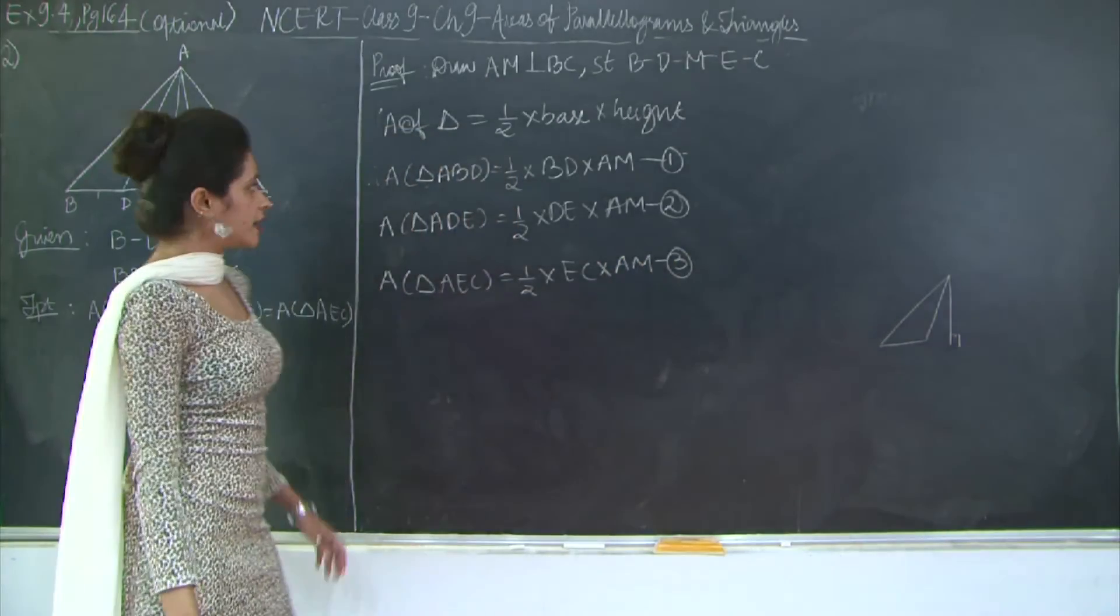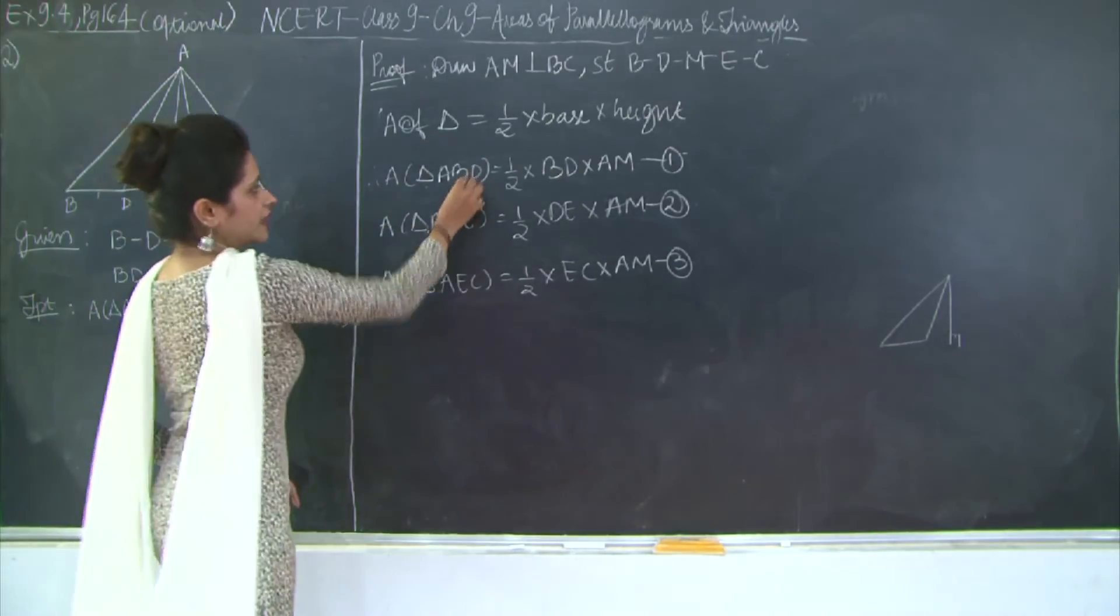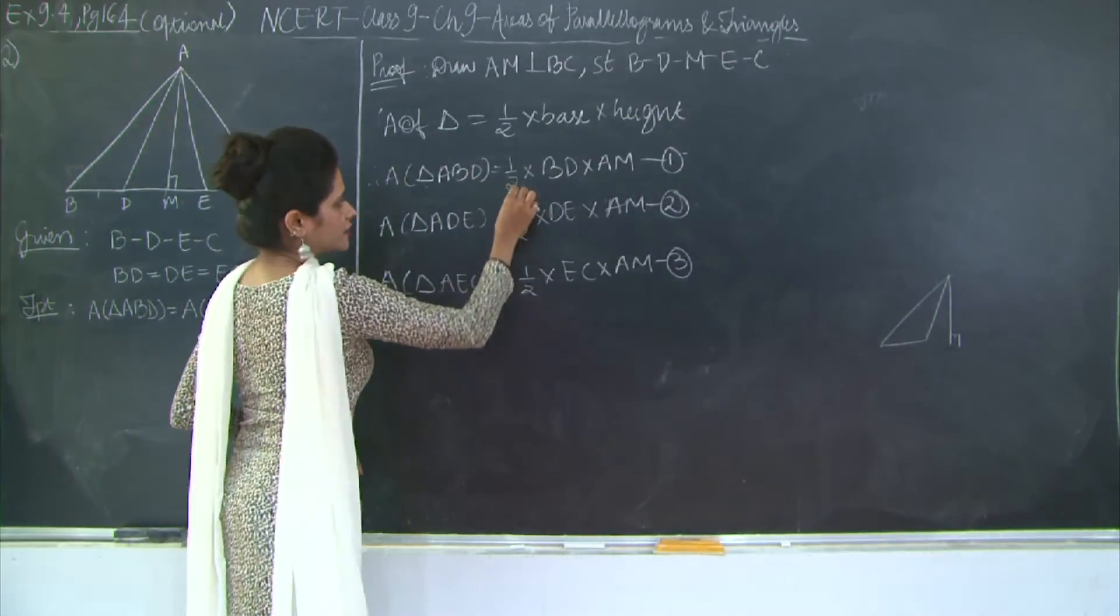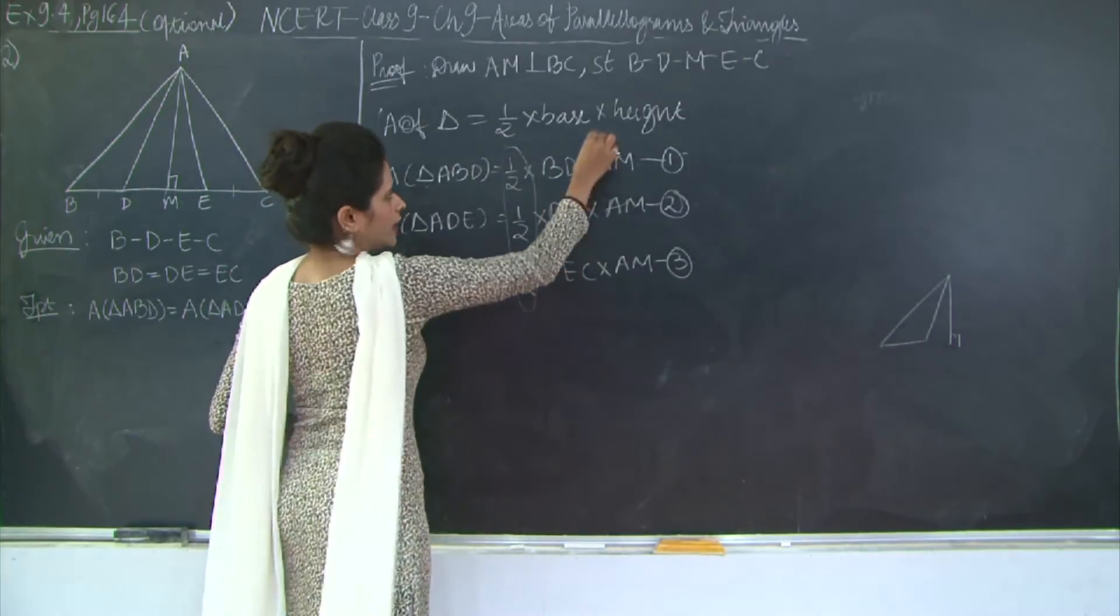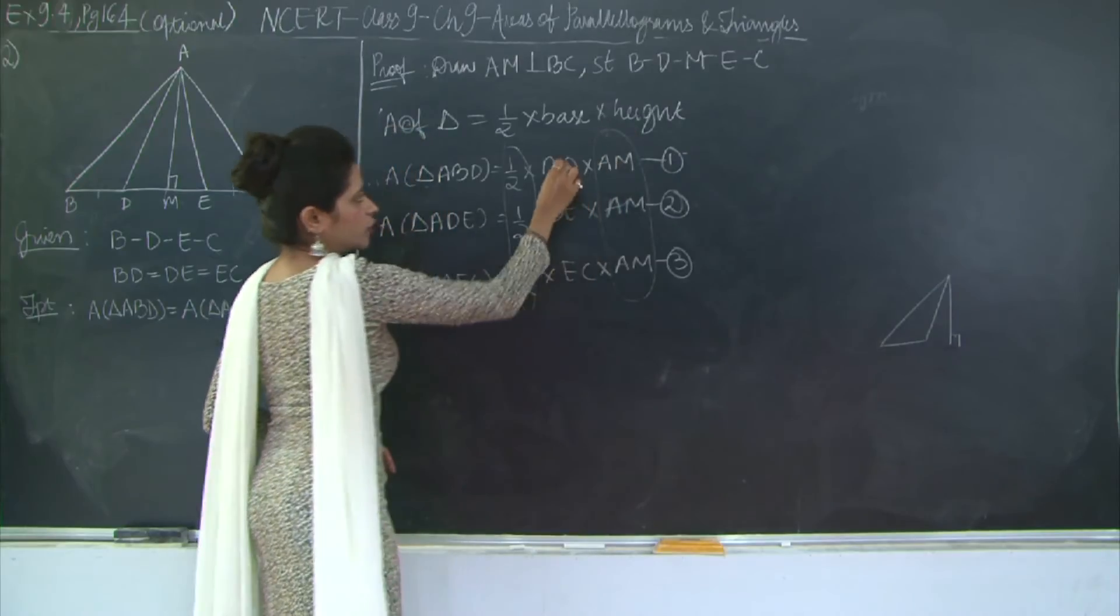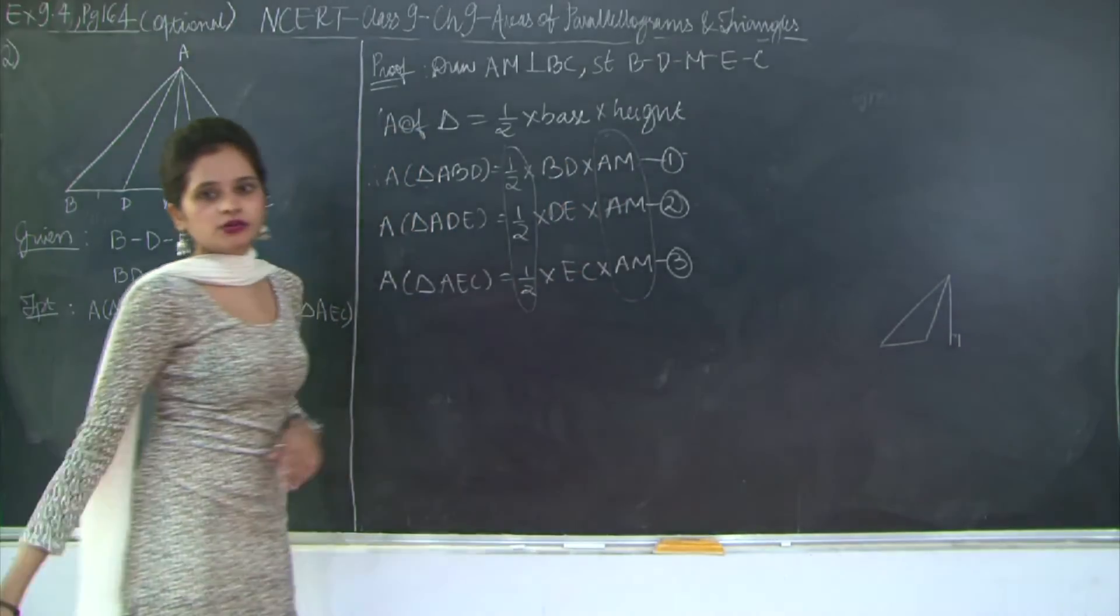Now if you compare 1, 2 and 3, you have the areas of the triangles. Half is equal for each of these. You have AM common and we also have BD is equal to DE is equal to EC.